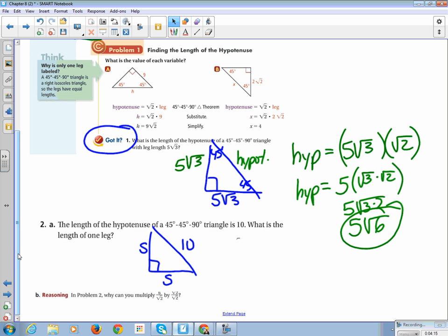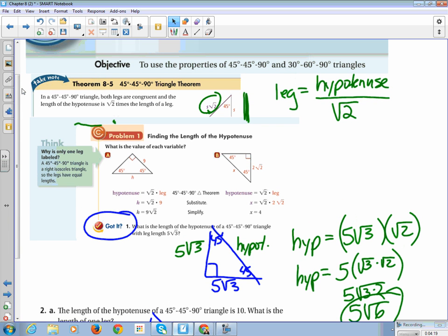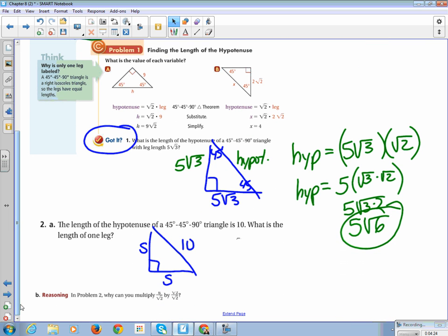So I gave you the formula up here. A leg is equal to the hypotenuse divided by the square root of 2. So here's my S is equal to 10 divided by square root of 2. And I'm going to give you a bonus right here,